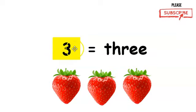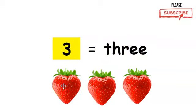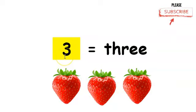This is the number three and this is how you write three in word form. How many strawberries do we have? One, two, three. Three strawberries. The number three.